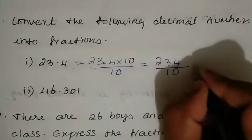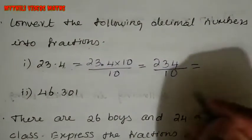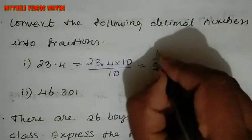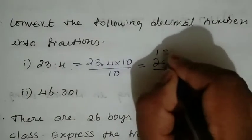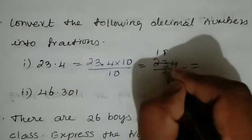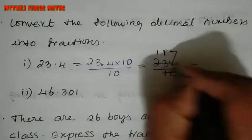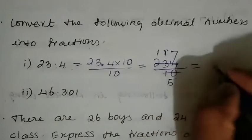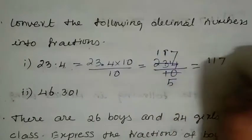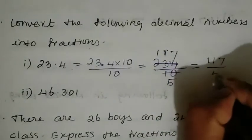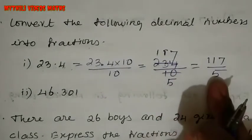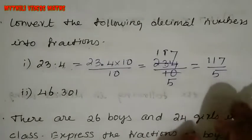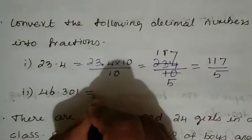Now we want to reduce to lowest form, so just cancel. Using the 2 times table: 234 divided by 10 — we cancel to get 117 divided by 5. This is your answer in lowest form. Now the second number is 46.301.